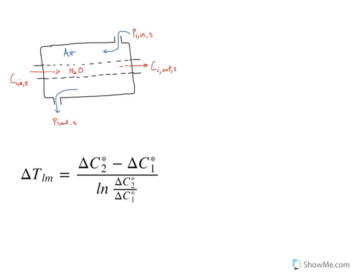One of the equations for modeling this system requires finding a parameter called delta C star log mean. It involves terms called delta C star 2 and delta C star 1. Position 2 is always on one end and position 1 on the other. Delta C star 2 would be written as either the partial pressure in the shell minus the concentration in the tube, or the tube minus the shell — whichever you choose, just stay consistent. For this example, we'll do shell minus the tube.